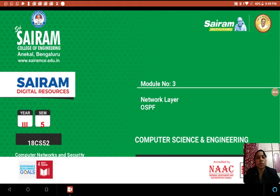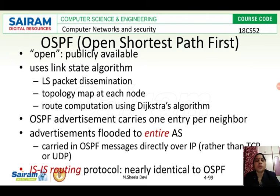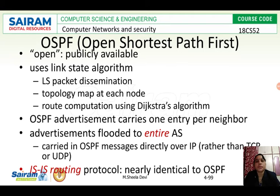In this video we are going to see OSPF protocol. OSPF works in the network layer and it is nothing but Open Shortest Path First protocol, which is an intra-autonomous system routing protocol that exists in the autonomous system to find the shortest path between nodes inside the same autonomous system. It is called Open Shortest Path First since it is available publicly.